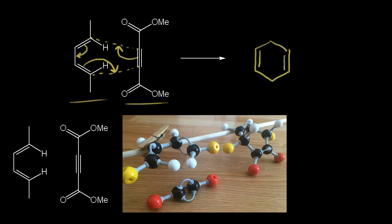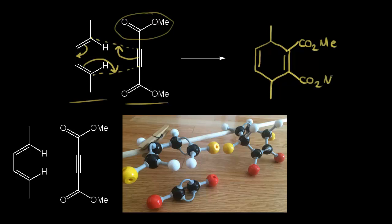Let's put in these bonds. We have these methyls right here, and I'm going to abbreviate these esters as CO₂Me. The reason we chose this alkyne as our dienophile is because we don't have to worry about stereochemistry at these two carbons from the dienophile. We do need to worry about stereochemistry at the two carbons that came from our diene.